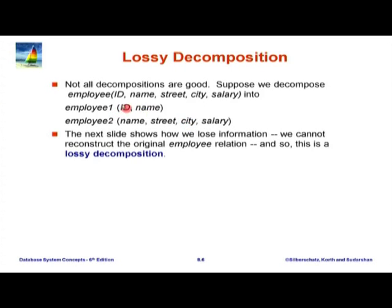Let us take this particular decomposition: one relation is employee1 with ID and name; the other relation has name, street, city, and salary. When we decompose, we do not want to lose information. In this example, if we assume that names can repeat—an employee ID is unique and determines name, street, city, and salary—we are not saying anything about name being unique. There could be duplicate names, and that is realistic. This particular decomposition is actually what is called a lossy decomposition: it loses information.